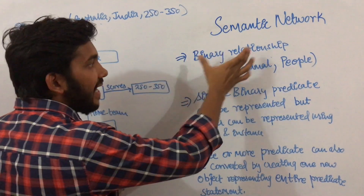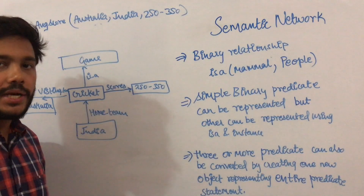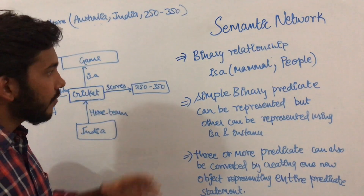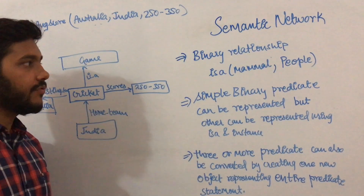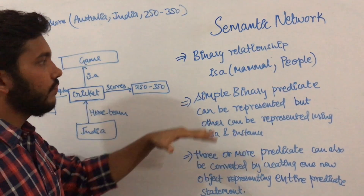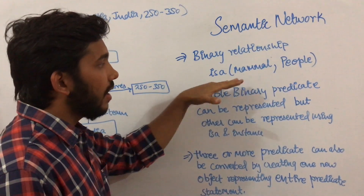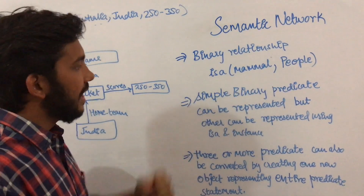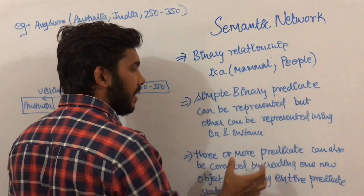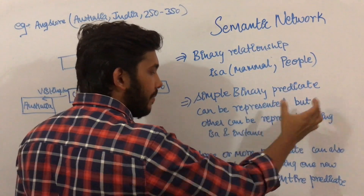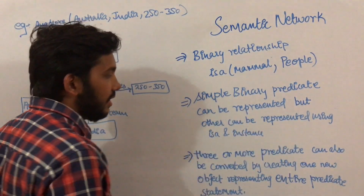Now coming to binary relationships — binary relationships in predicate logic were easy to represent, and representing binary relationships in a semantic network is also easy. We can represent binary relationships with the is-a relationship. Simple binary predicates can be represented, and others can be represented using is-a and instance.